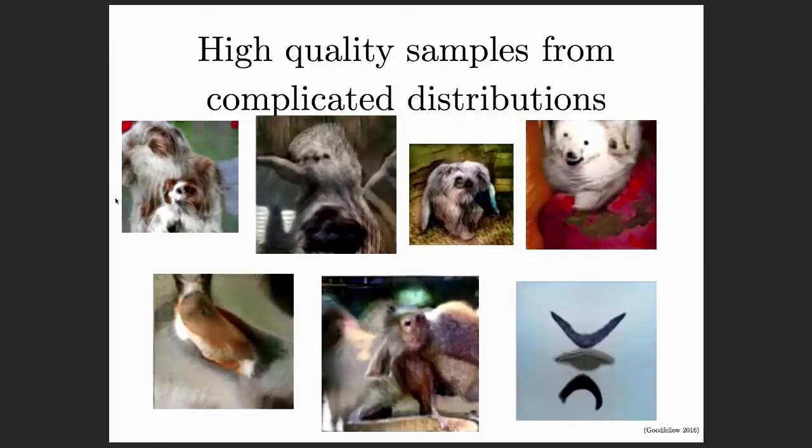Overall, generative adversarial networks have become known for being able to produce high-quality samples from very complicated distributions. I show here some cherry-picked examples of images from the ImageNet dataset created by a generative adversarial network. Many of the ideas I'll propose today are based on this idea that we can get really good samples from a distribution that might be hard to capture with some kind of analytical function. Very difficult integrals that arise in Bayesian learning could benefit from sampling from these new forms of approximations to complicated distributions.